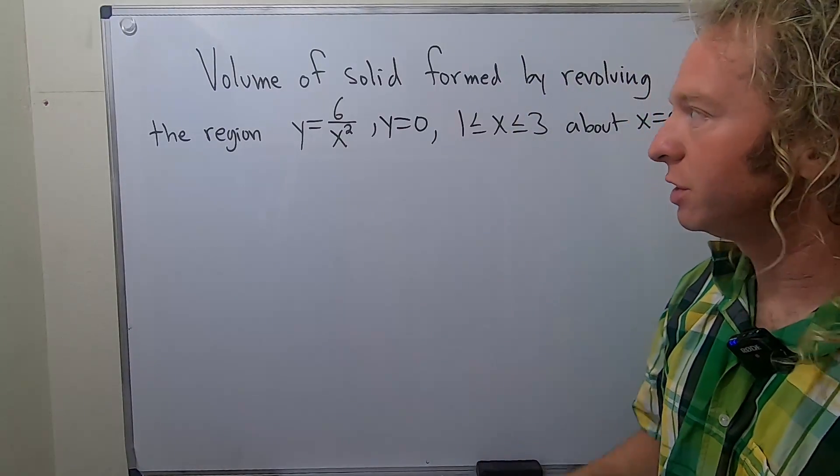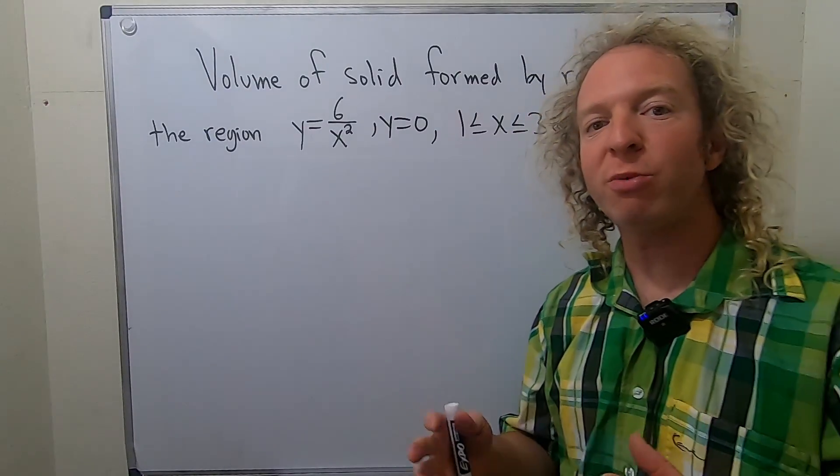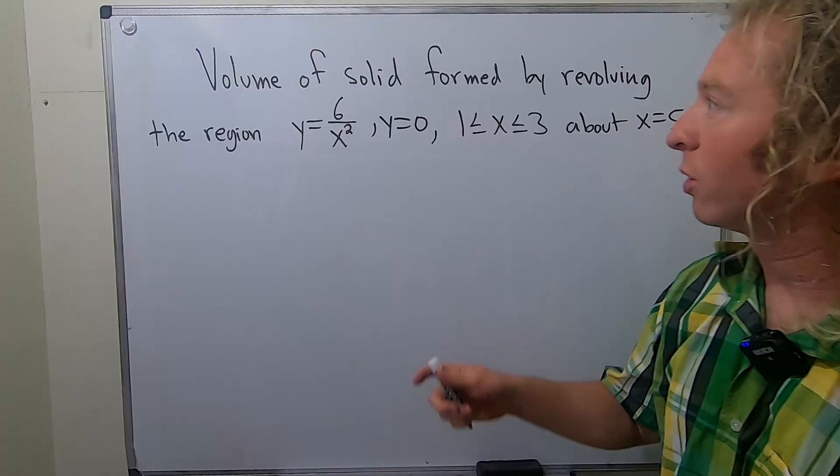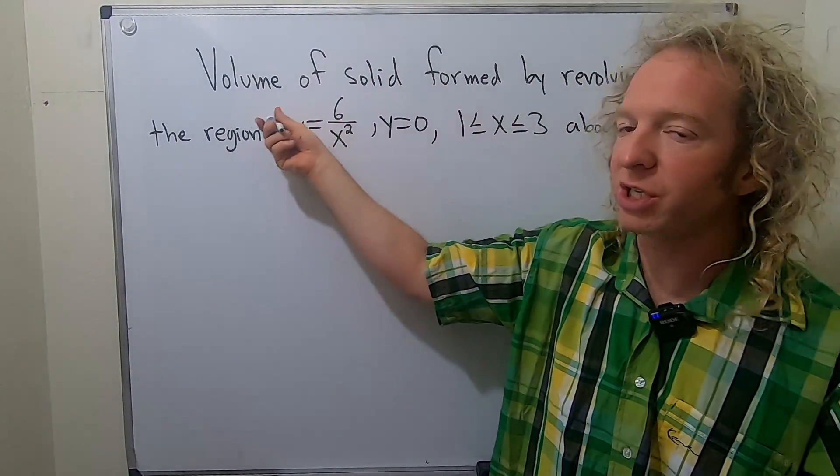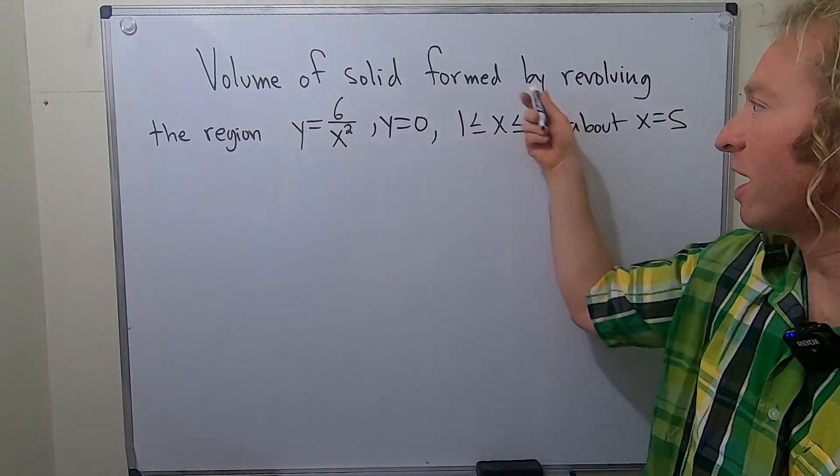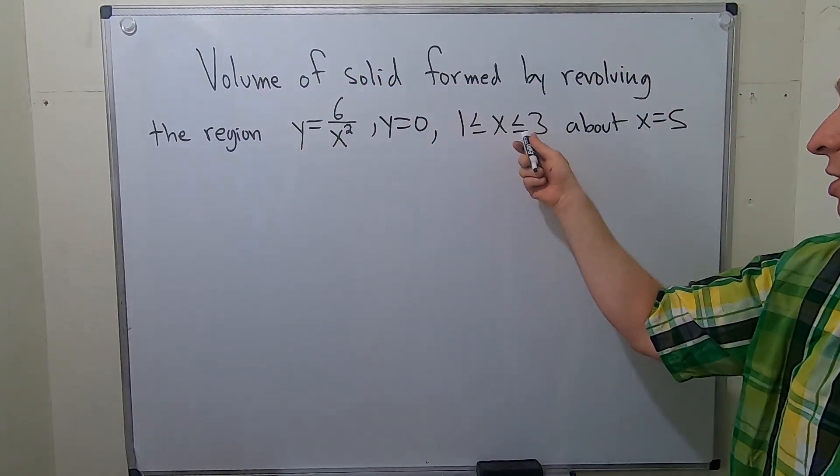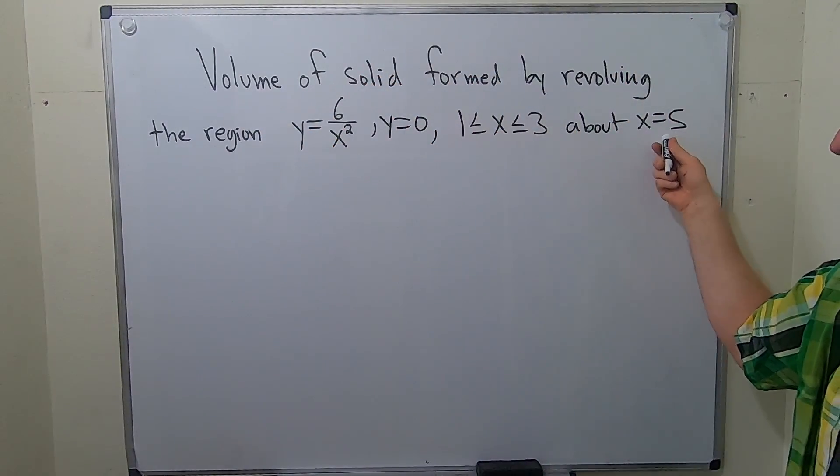Hi everyone, in this video we're going to use the shell method to find the volume of a solid. We're going to find the volume of the solid formed by revolving the region bounded by these graphs, and with this condition, about the line x equals 5.